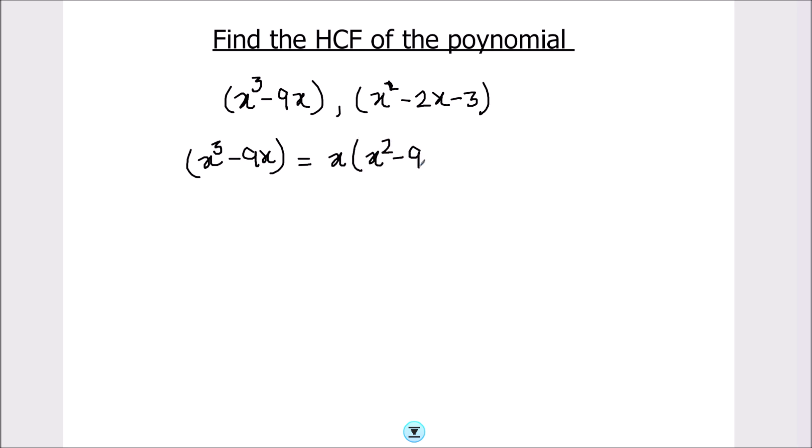In the next step we can write it as x² - 3² because 3² equals 9. So now it is of the formula a² - b², and a² - b² can be written as (a - b)(a + b).